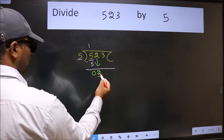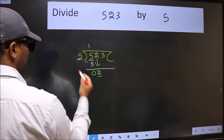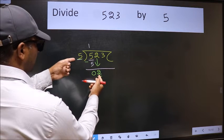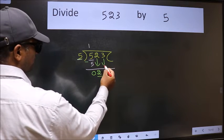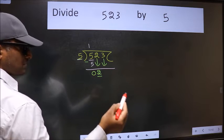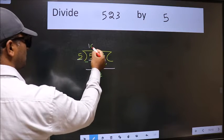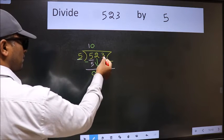Now here we have 2 and here 5. 2 is smaller than 5, so we should bring down the second number. And the rule to bring down the second number is we should put 0 here, then only we can bring this number down.